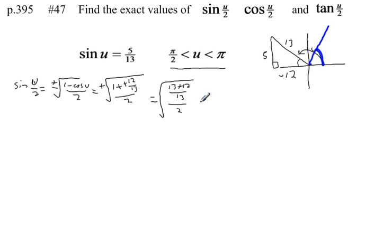If I multiply top and bottom by 1 half, here's what that will give me. The square root of 25 over 26. Multiply this by 1 half, that's over 1. So I have the square root of 25 over 26.